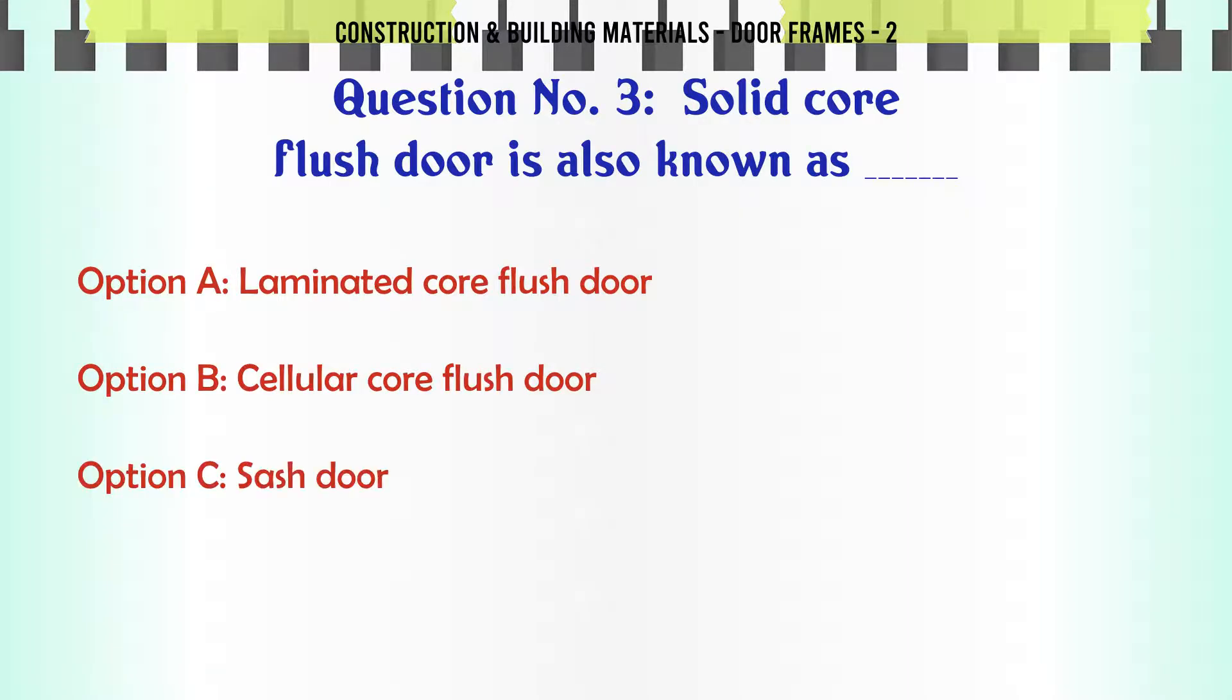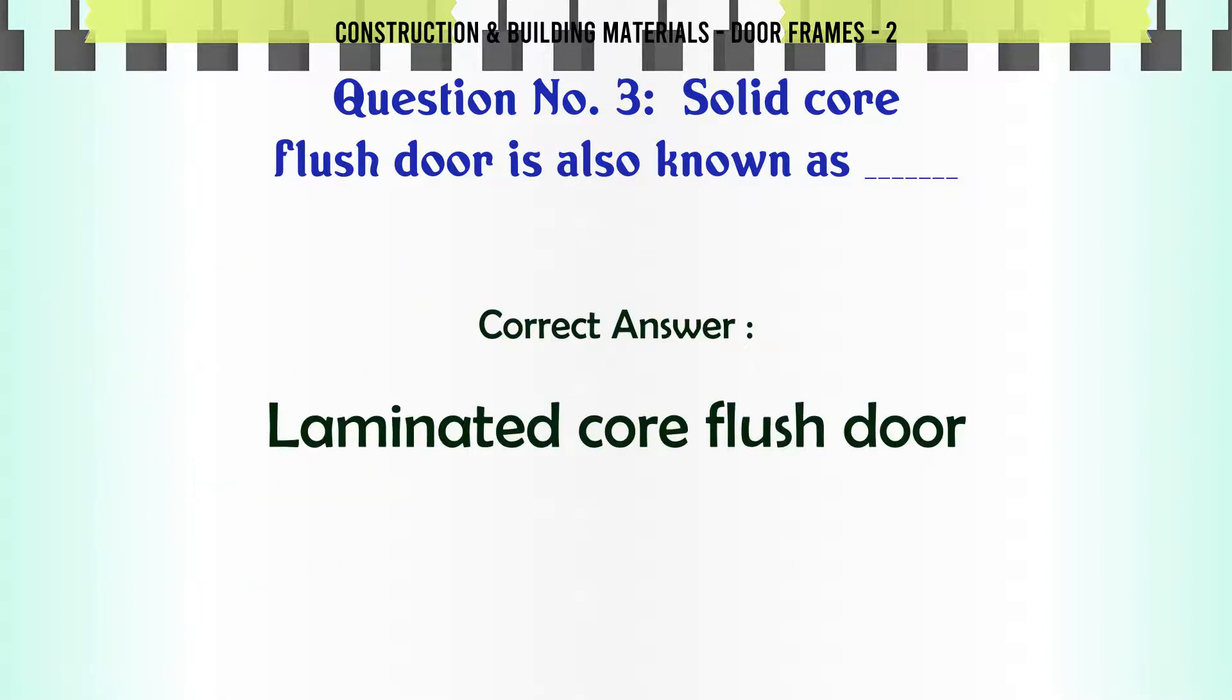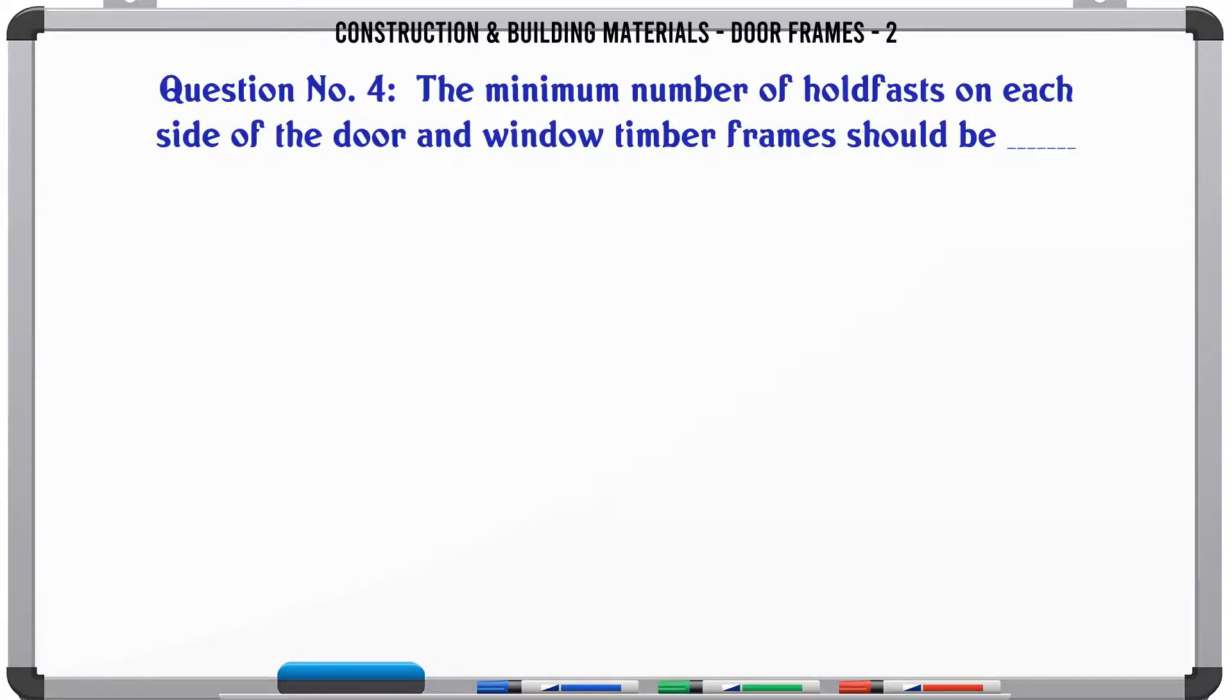Question 3: Solid core flush door is also known as: A. Laminated core flush door, B. Cellular core flush door, C. Sash door, D. Battened door. The correct answer is laminated core flush door.